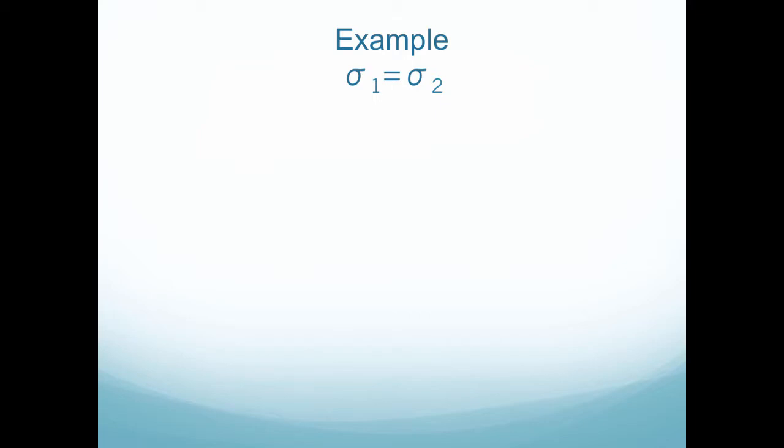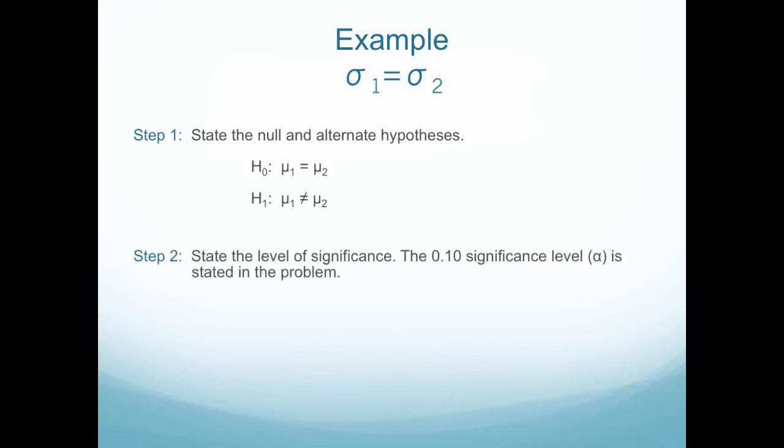So let's see how this works. So the first step I'm going to do is state the null and alternative hypotheses. My null hypothesis is that they are going to be equal to each other. Or another way of saying that is mu1 minus mu2 equals 0. Then my alternative hypothesis would be that they are not equal to each other. Or that mu1 minus mu2 does not equal 0. Step two, state the level of significance. So they told us in the problem that we're going to use the 0.1 level of significance.